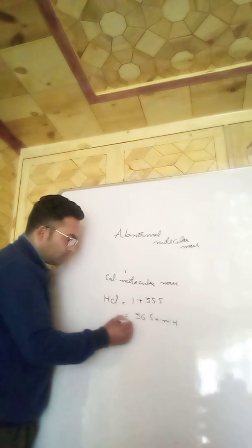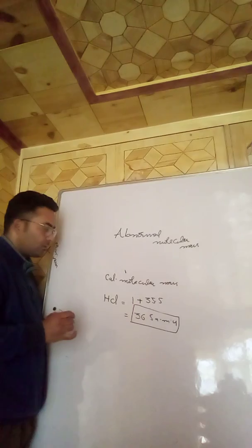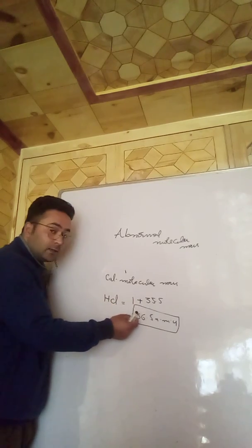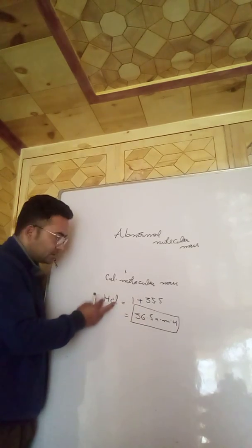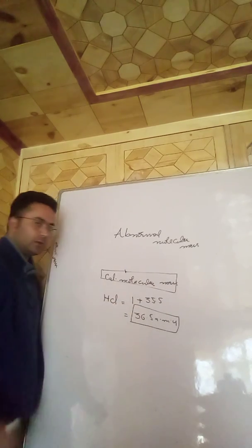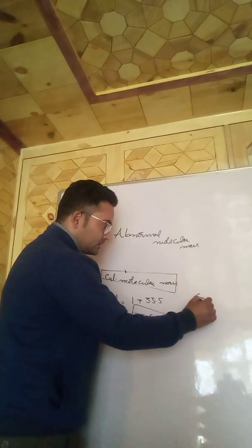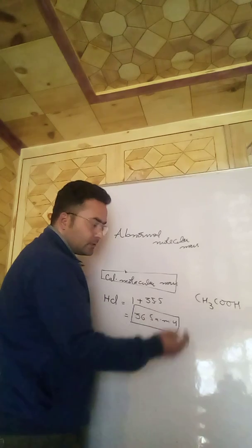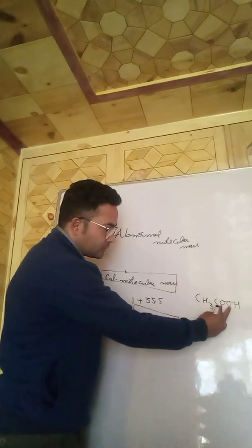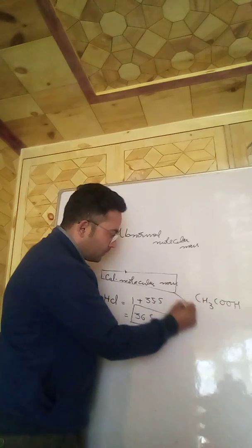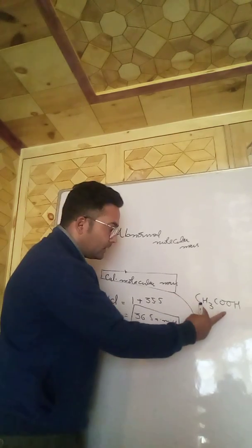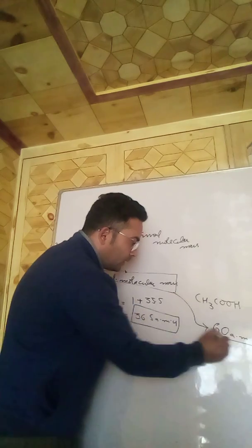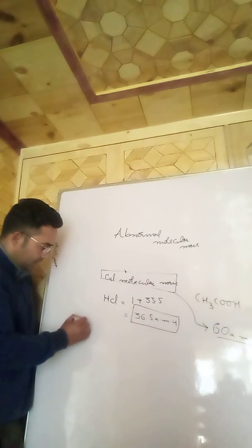So calculated molecular mass is derived from the sum of the atomic masses present in a molecule. For example, if we take CH₃COOH and calculate its molecular mass by combining the atomic masses of all atoms present in this molecule, we get 60.